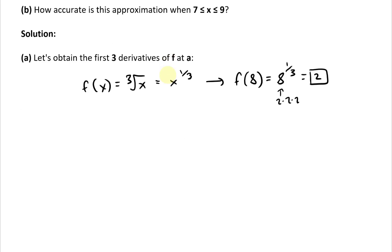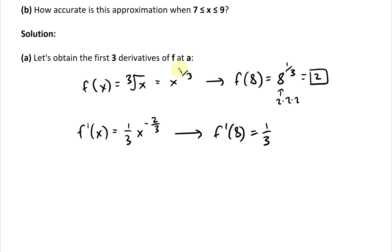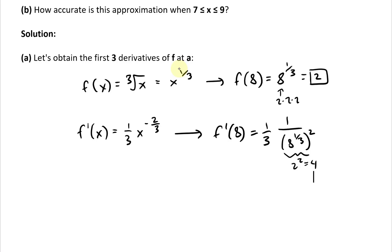The next one is f'(x). Using the power rule, the exponent one-third comes down, and we subtract one from it: one-third minus three-thirds gives negative two-thirds. So f'(x) = (1/3) x^(-2/3). Plugging in f'(8): we get (1/3) times 8^(-2/3). Since 8^(1/3) = 2, 8^(2/3) = 4, so this equals one over twelve.